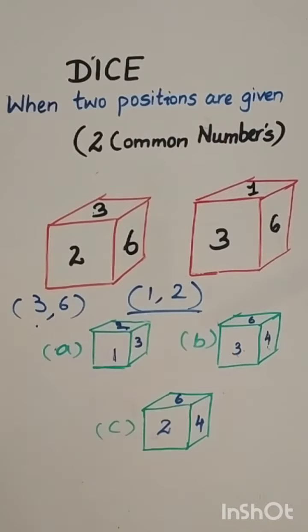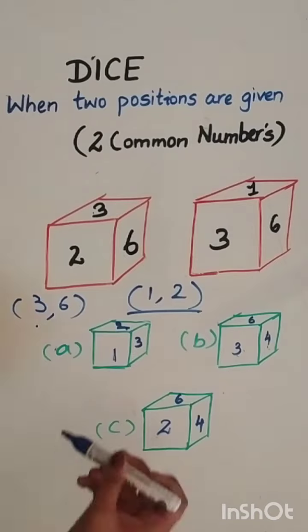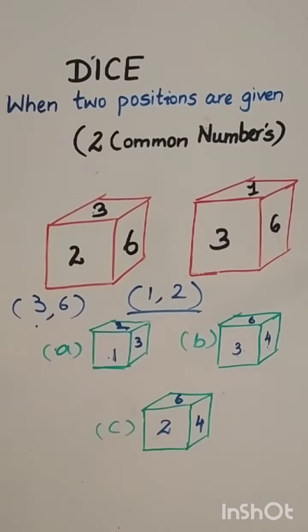Now you understood that 1 and 2 are opposite to each other. So as 1 and 2 are opposite to each other, in the first option they have given it is adjacent. Hence the first option can't be possible.